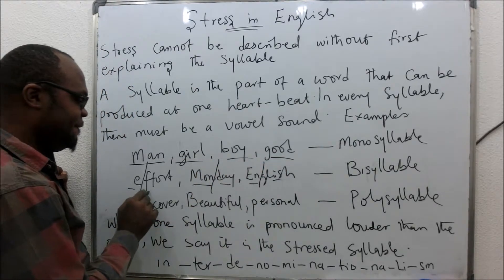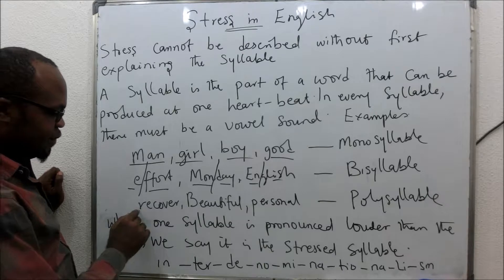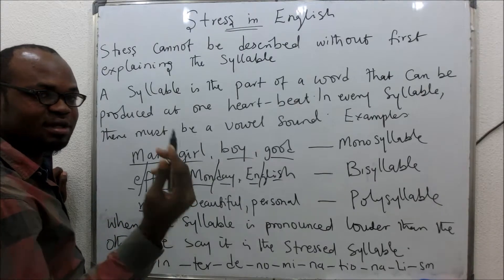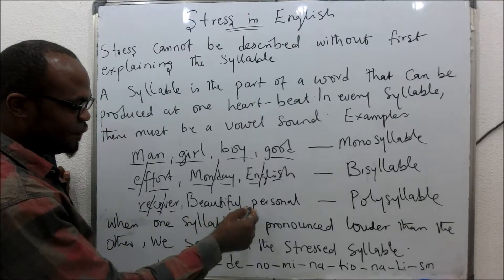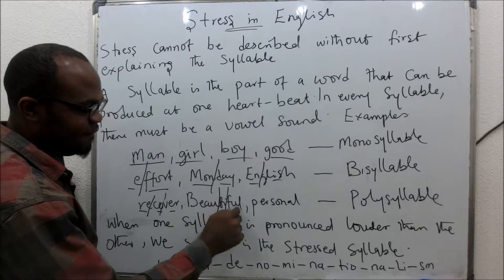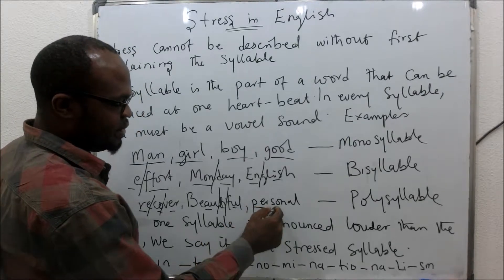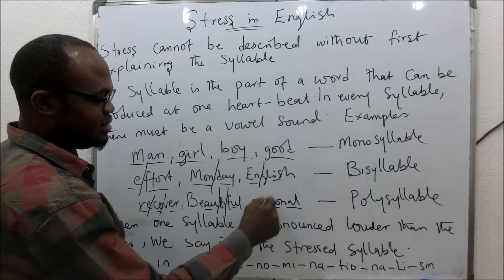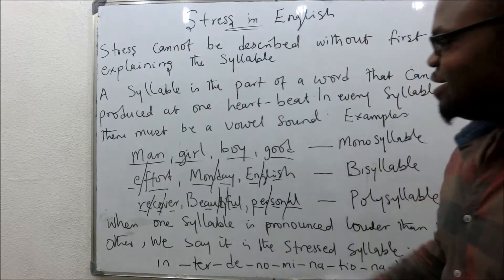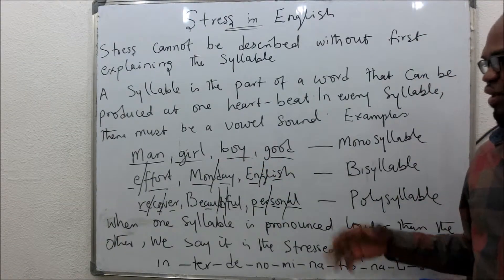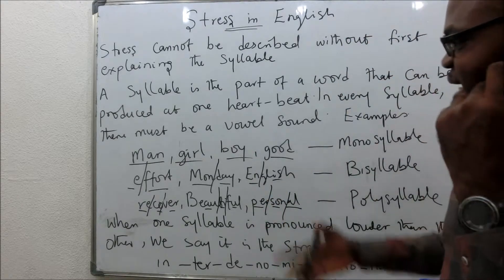Bisyllable words include: effort, Monday, English. Now you come to 'recover' — three syllables: re-co-ver. 'Beautiful' — three syllables. 'Personal' — three syllables. So if a word is not monosyllabic or bisyllabic, once it is from three syllables upwards, you say that it is polysyllabic or polysyllable.